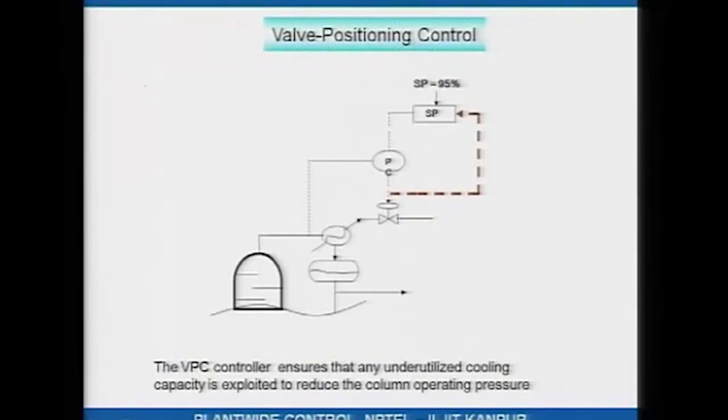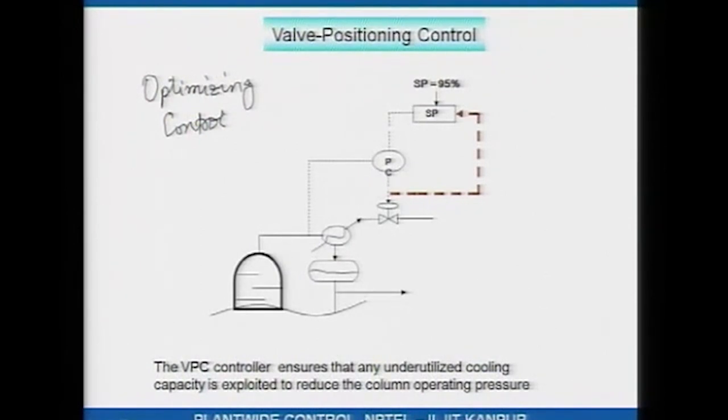This is another example of a valve positioning controller application. It is for this reason that valve positioning control is also sometimes referred to as optimizing control — by implementing valve positioning controllers, you are trying to either minimize steam consumption, minimize electricity consumption, or in another application maximize production or throughput. Valve positioning control is routinely employed in order to make your operation as economical as possible.